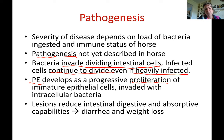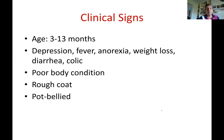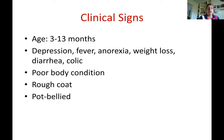Proliferative enteropathy progresses with more proliferation over time, reducing intestinal digestive and absorptive capabilities. These horses develop diarrhea — ranging from severe to just pasty feces — and definite weight loss. The affected age range is from weanling to about one year of age. Clinical signs include depression, fever, anorexia, weight loss, diarrhea, and colic. These horses are simply not thriving — they are unthrifty and look worse than they should for their age.